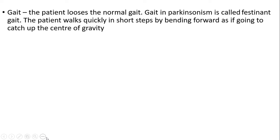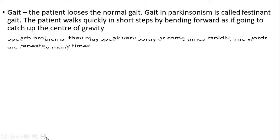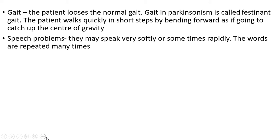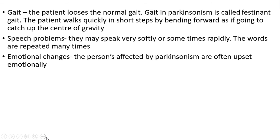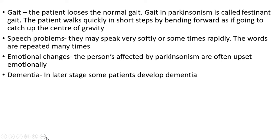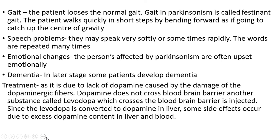Gait: the patient loses the normal gait. Gait in Parkinsonism is called festination gait — the patient walks quickly in short steps by bending forward as if trying to catch up with their center of gravity. Speech problems: the patient may speak very softly or sometimes rapidly, and words are repeated many times. Emotional changes: persons affected by Parkinsonism are often emotionally upset. Dementia may develop in later stages in some patients. Treatment: since the condition is due to a lack of dopamine, and dopamine does not cross the blood-brain barrier, a substance called levodopa, which crosses the blood-brain barrier, is administered. However, some side effects occur due to excess dopamine content in the liver and blood.